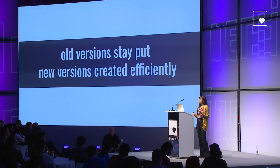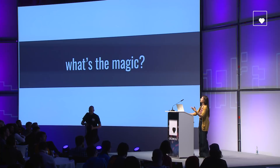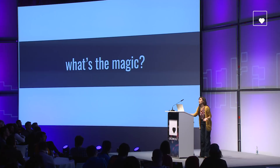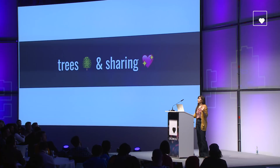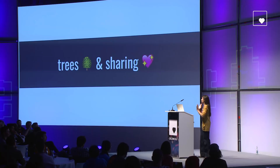The key is that we want old versions of our data — like my original zoo — to stay put, just sit like the rock. But we want new versions to be created efficiently. The solution is very simple: trees and sharing. These two simple concepts will get us efficient, immutable data.